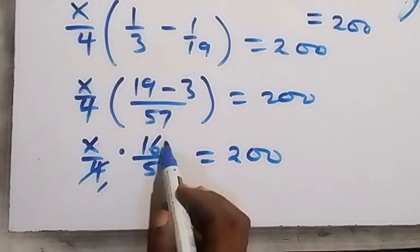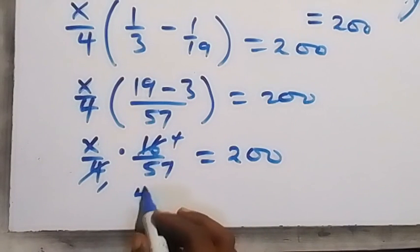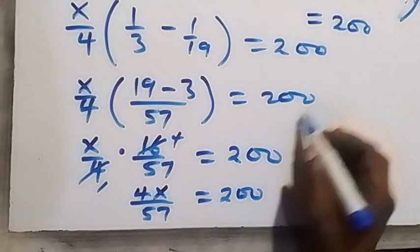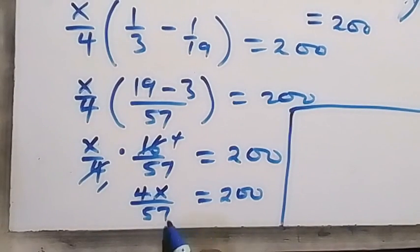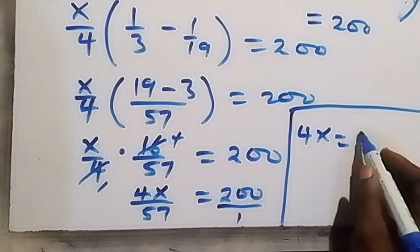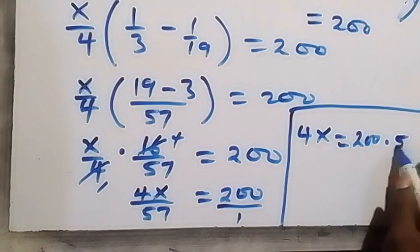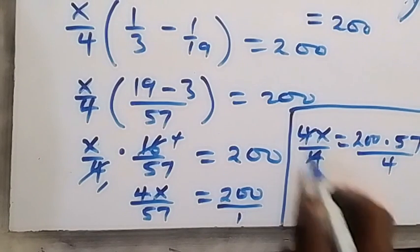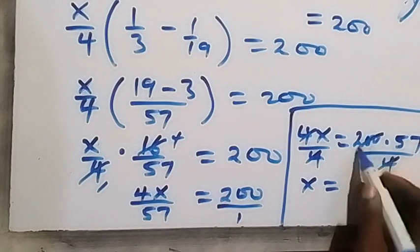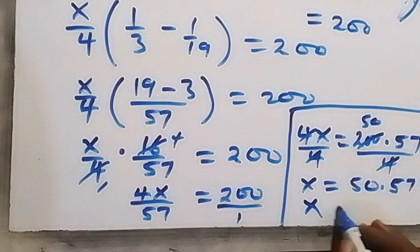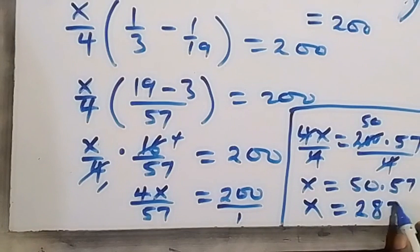From here, 4 cancels with 16 giving 4, so we have 4x over 57 equals to 200. Then by cross multiplication, 4x equals 57 multiplied by 200, that's 200 times 57. And from here, we divide both sides by 4. 4 cancels on the left, leaving x. 4 goes into 200 giving 50. So we have 50 multiplied by 57, which gives us 2,850. Therefore x equals 2,850.